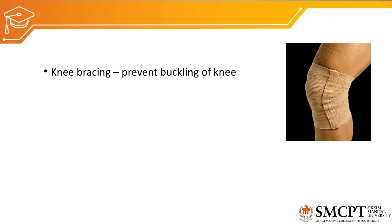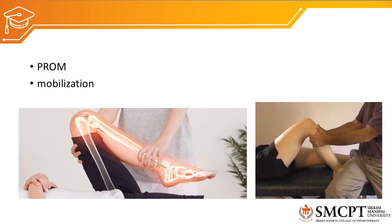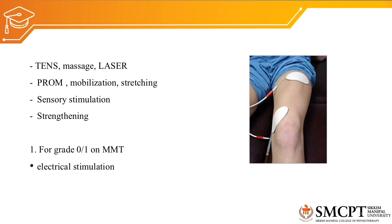To prevent knee buckling, knee bracing can be used while walking on stairs or normal ground. Passive range of motion exercises and mobilizations help reduce stiffness and maintain range of motion at the knee joint. For pain reduction, TENS and massage can be applied, as well as laser therapy, which also aids biostimulation of nerve tissue and helps regeneration. Passive ROM, mobilization, and stretching will also maintain the length of the quadriceps and hamstring.